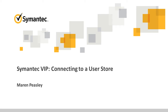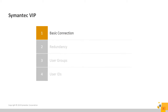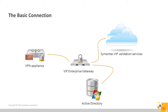Connecting to the authoritative user store allows us to check the user's username and password, group membership, and retrieve user attributes without needing to replicate all of this somewhere else. The basic connection to Active Directory introduces us to the technical reference architecture used in this video. This architecture shows a VPN or other application on the left, VIP Enterprise Gateway software in the middle, the Symantec VIP Validation Services or VIP Cloud in the upper right, and an internal user store — frequently Active Directory or another server reachable via LDAP. The VPN server and VIP Enterprise Gateway communicate over a protocol called RADIUS.